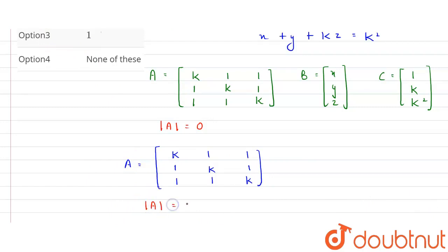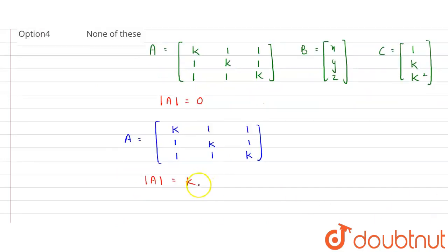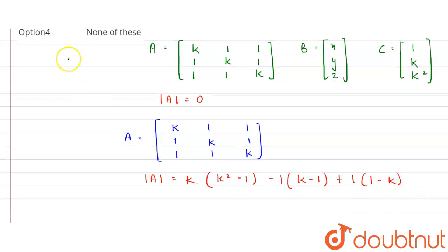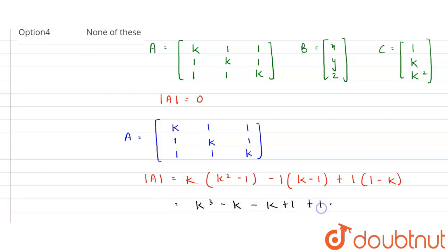The determinant of A is expanded as: k(k² - 1) - 1(k - 1) + 1(1 - k). Simplifying: k³ - k - k + 1 - k + 1, which gives k³ - k - k - k + 1 + 1.